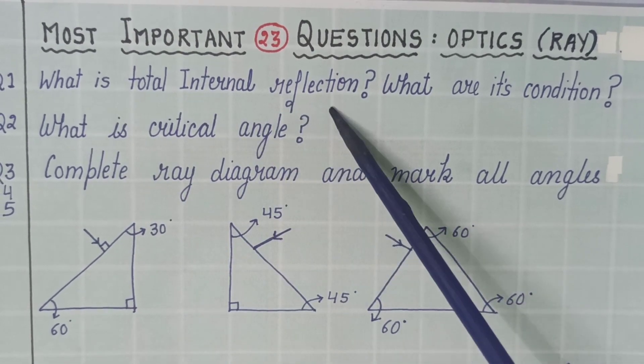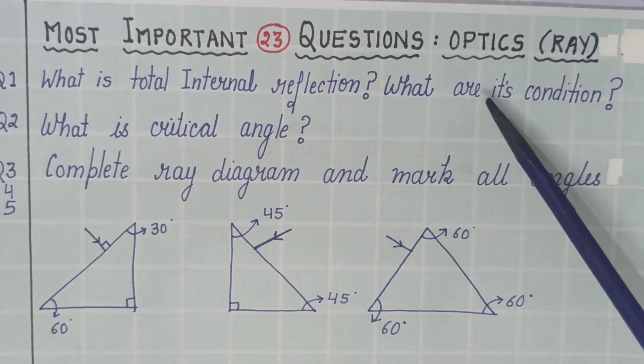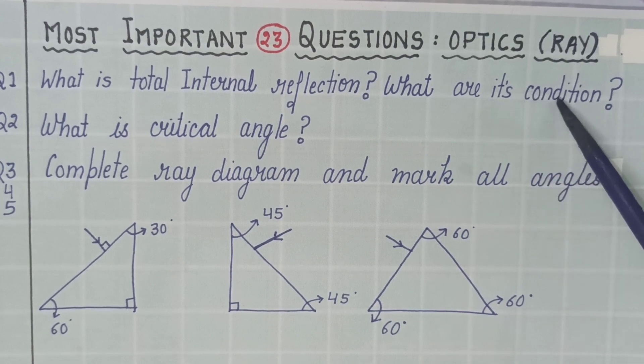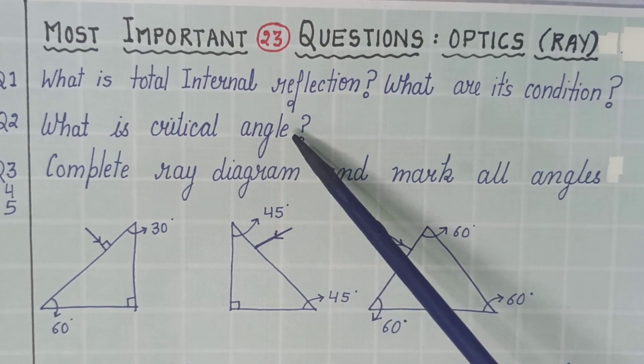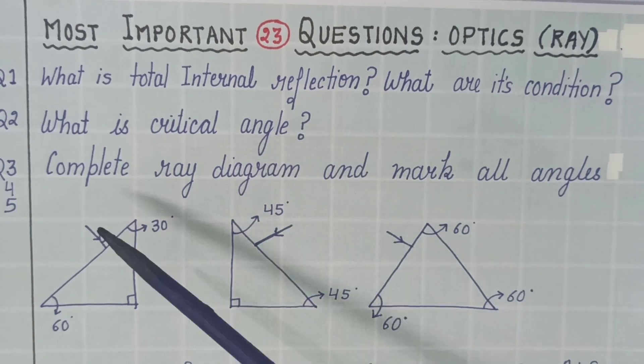First, what is total internal reflection and what are conditions for total internal reflection? Second important question is what is critical angle? Third important question,